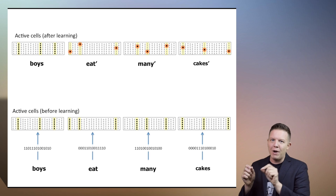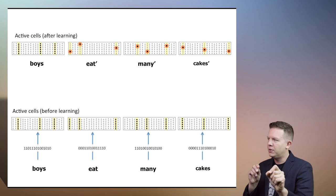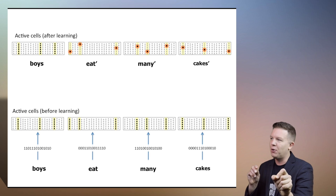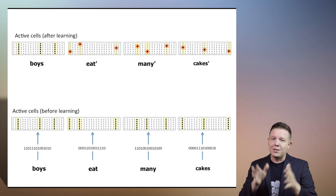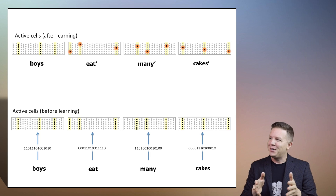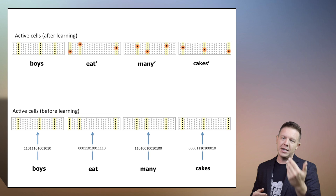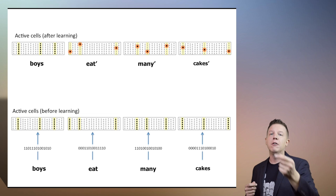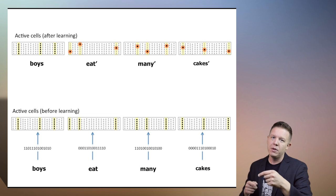So we're driving down this temporal sequence all the way to 'cakes,' which is now 'cakes prime.' Cakes — the spatial pattern — is represented in cakes prime within the context of many prime,